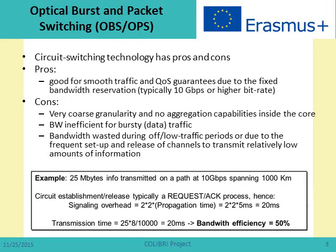Up to now, optical networks have been using optical circuit switching, so they have been circuit switching oriented networks. Circuit switching has some advantages — the most valuable one is that they provide good quality of service guarantees — but the most important drawback is that circuit switching is not efficient for bursty traffic. As nowadays most of the traffic is data traffic, internet traffic, this traffic is essentially bursty, so circuit switched networks are not appropriate to carry this kind of traffic.